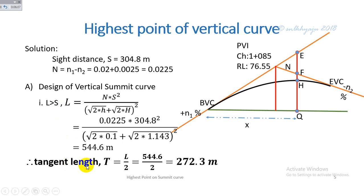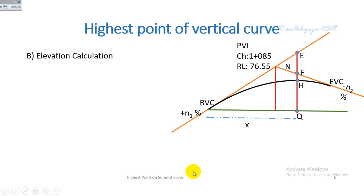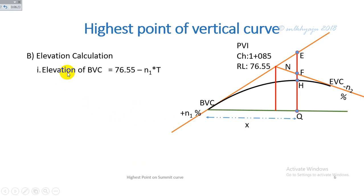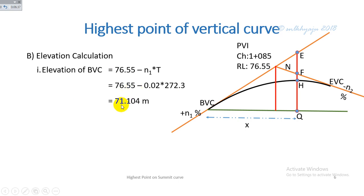The tangent length T = L / 2 = 272.3 m. For elevation calculations: the elevation of the beginning of the vertical curve = elevation of VPI − n1 × T = 76.55 − n1 × 272.3 = 71.104 m.